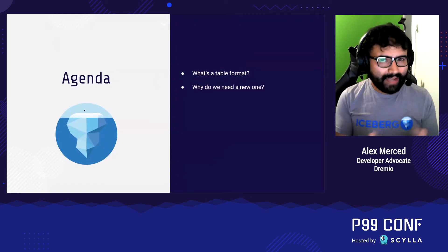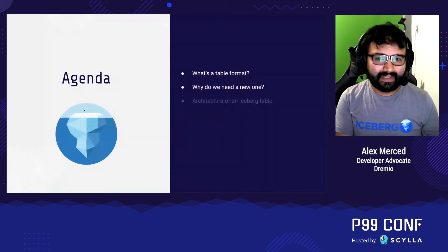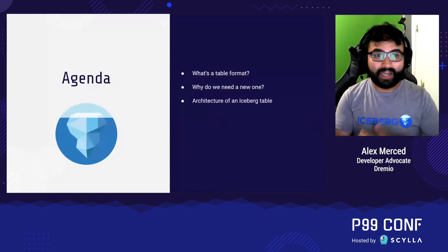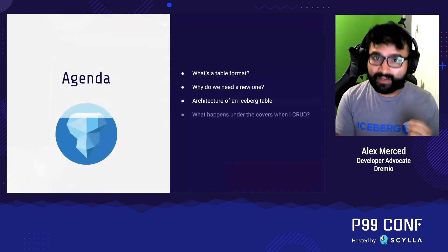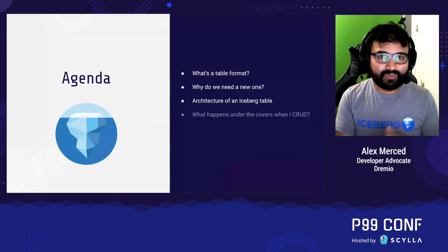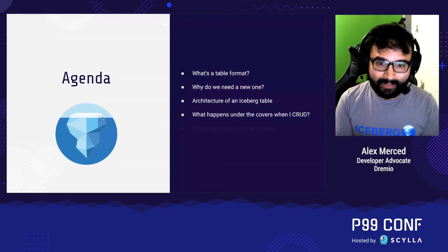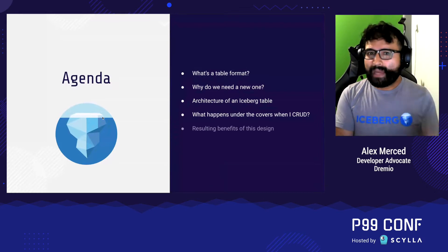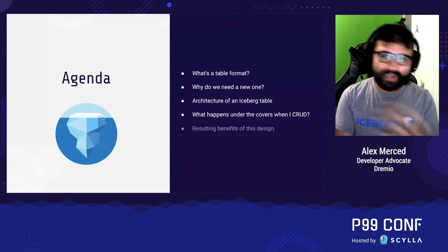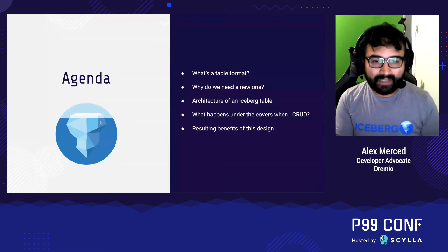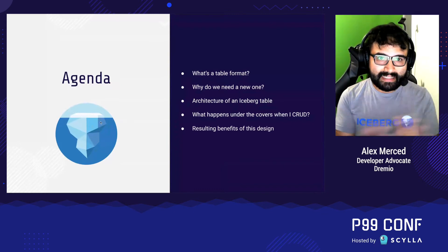why do we need a new one, what is the architecture of an Iceberg table — because that's going to unlock all the benefits — what happens when we create, read, update, and delete data with an Iceberg table, what the resulting benefits of that design are, and what the value is for our overall data infrastructure when we adopt Apache Iceberg.